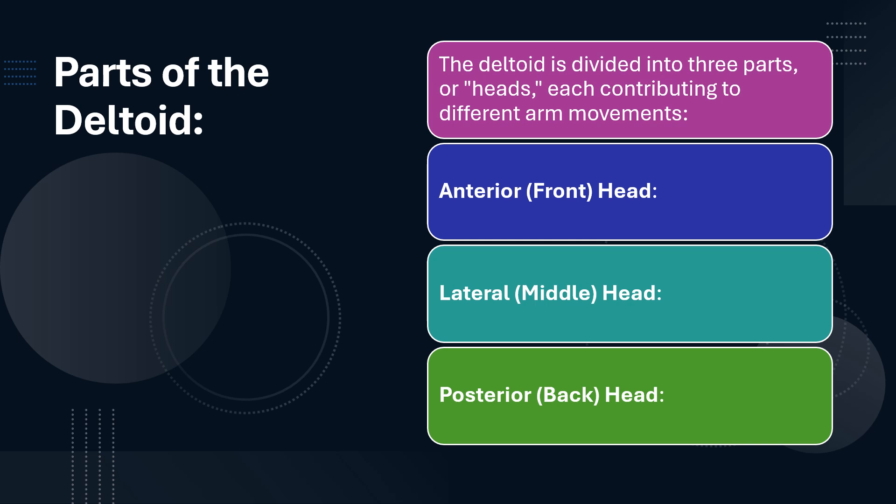Then you have the posterior — the back head. This part helps lift your arm backwards, like when you pull something behind you. The deltoid muscle is the only muscle in the human body that's an agonist and antagonistic to itself.